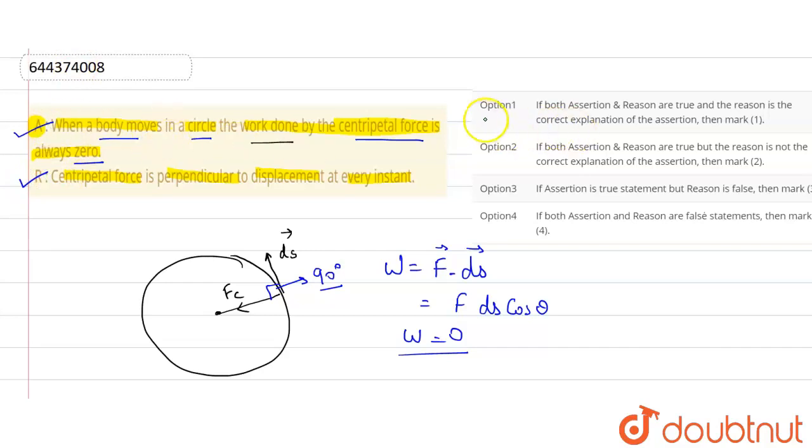So we can say that both assertion and reason are true, and the reason is the correct explanation of the assertion. Option one is correct. Thank you.